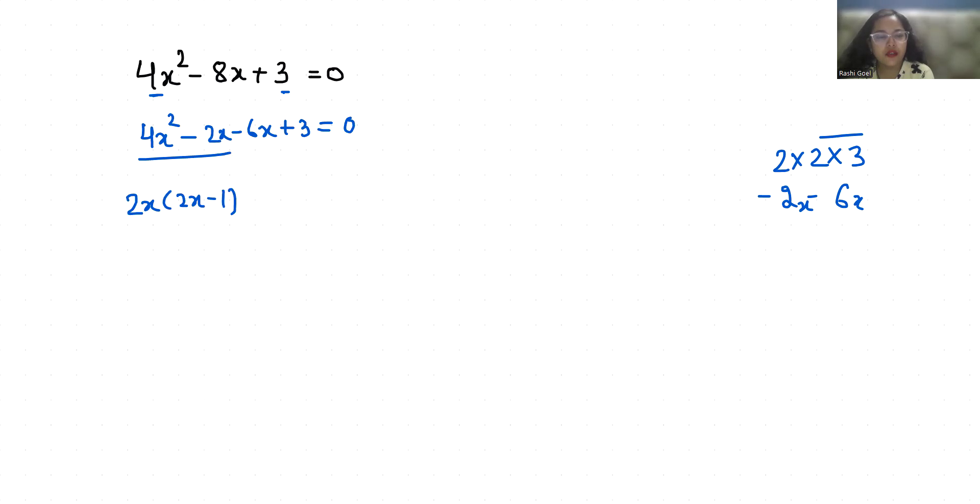So 2x - 1 equals 0. Now this 2x - 1 is common, so (2x - 1)(2x - 3) = 0. So x = 1/2 and x = 3/2.